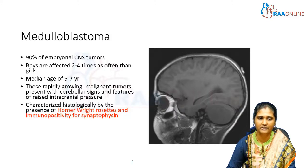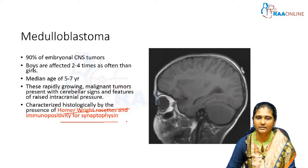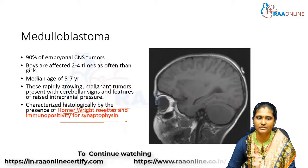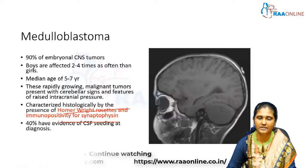Medulloblastoma is characterized histologically by the presence of Homer Wright rosettes and immunopositivity for synaptophysin. To summarize: it is the most common embryonal CNS tumour, a midline cerebellar tumour more common in boys, rapidly growing and malignant. The two characteristic histologic findings are Homer Wright rosettes and immunopositivity for synaptophysin. Additionally, 40% of cases show evidence of CSF seeding at the time of diagnosis.